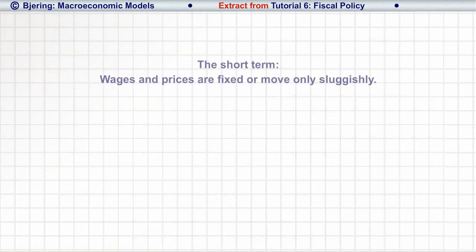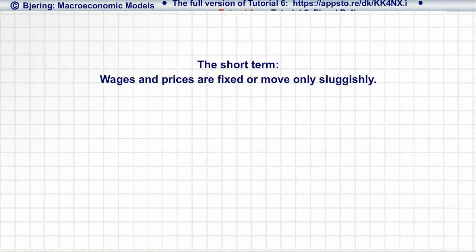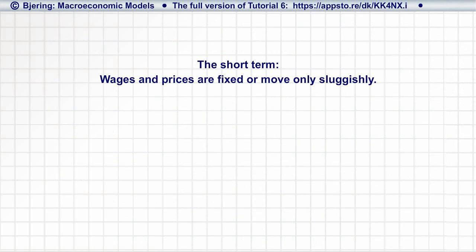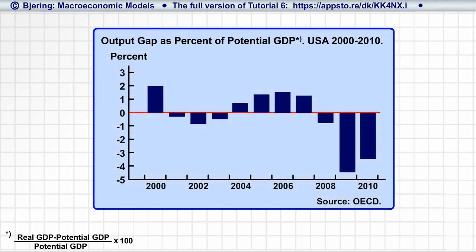In the short term, wages and prices are constant or move only sluggishly, so the business cycle may generate equilibrium output and income that differ from potential output and income, as reflected in negative or positive output gaps.